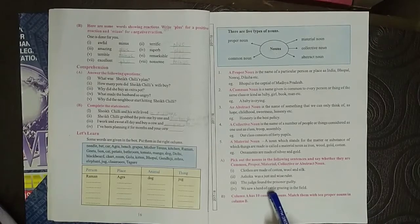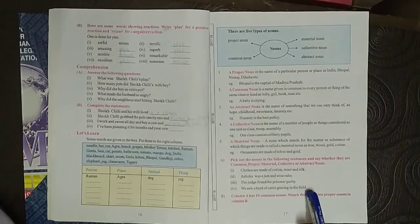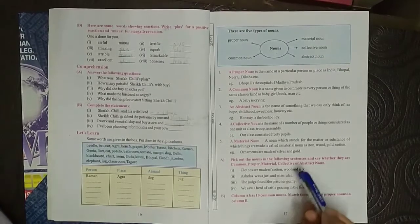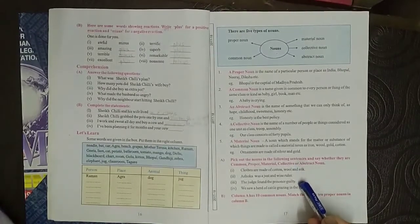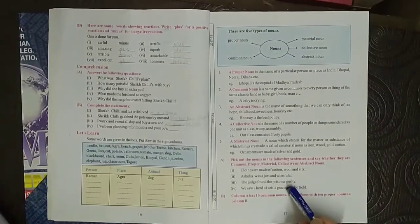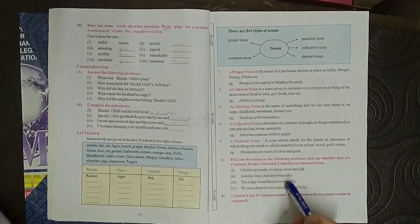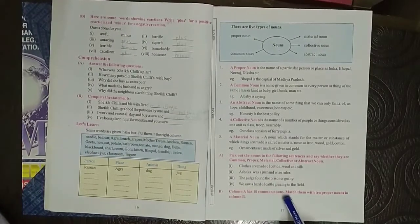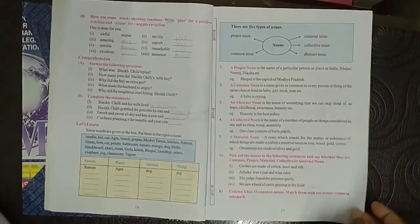Fourth: we saw a herd of cattle grazing in the field. This one is collective noun. So in this manner we can find the nouns.